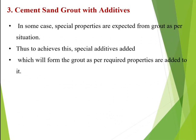The third grout material is cement sand grout with additives. In some cases, special properties are expected from grout as per the situation. To achieve these, special additives are added. For example, if we need early setting of the cement sand grout, we add external additives to accelerate setting, making it cement sand grout with additives.